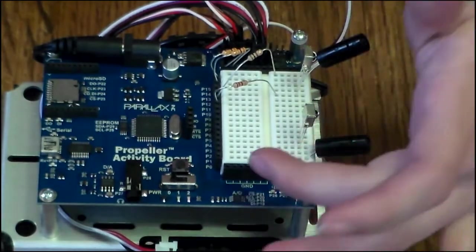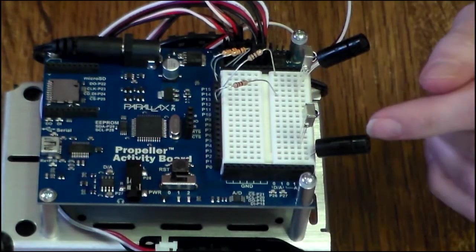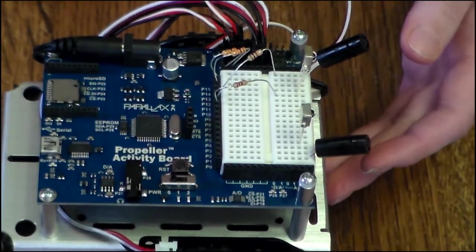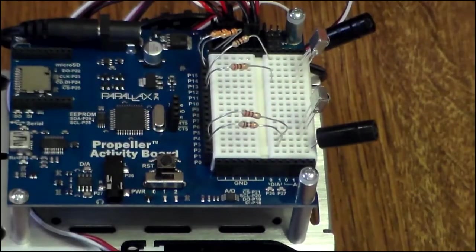And then you'll repeat that process for the other side, making sure that you attach to the left pin of the sensor and the right pin of the receiver, going into P1 and P2. Now we'll be attaching the rest of the wires.